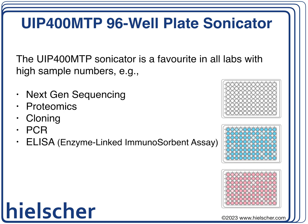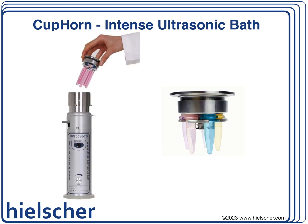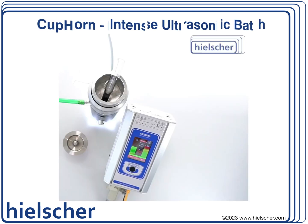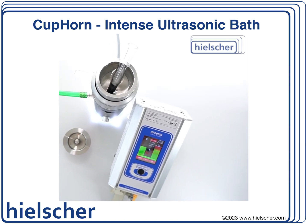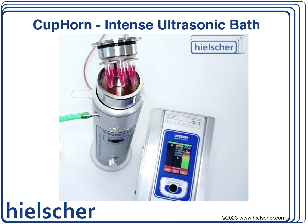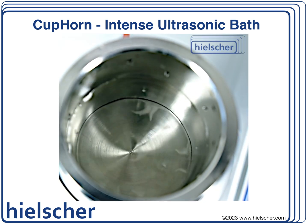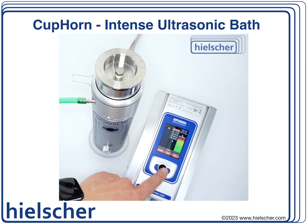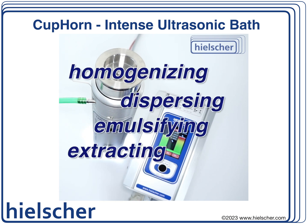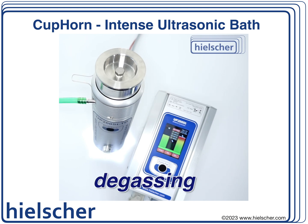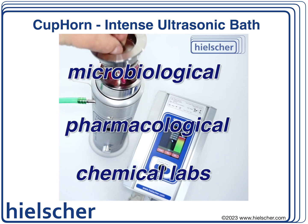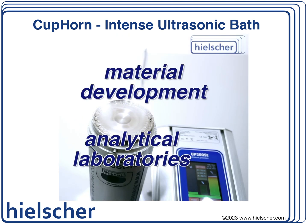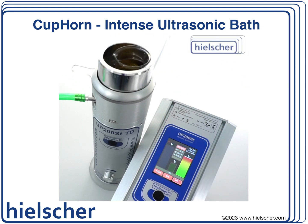Now let's look at another sonicator — the Heelscher cup horn. This cup horn serves as a high-intensity ultrasound water bath. Unlike conventional ultrasound baths that result in uneven sonication due to localized cavitation spots, the cup horn provides uniform ultrasound throughout the bath, with ultrasonic intensity exceeding typical ultrasonic baths by a factor of a thousand. Equipped with a special vial holder, it enables simultaneous sonication of up to five Eppendorf tubes and autosampler vials, and can also handle larger test tubes, beakers, small flasks, and syringes.